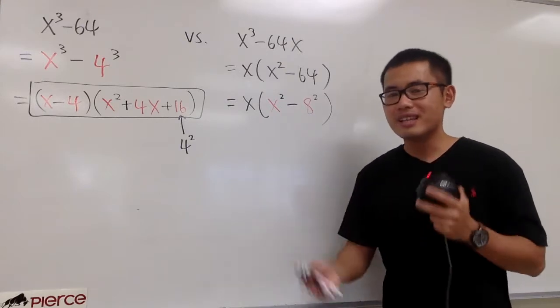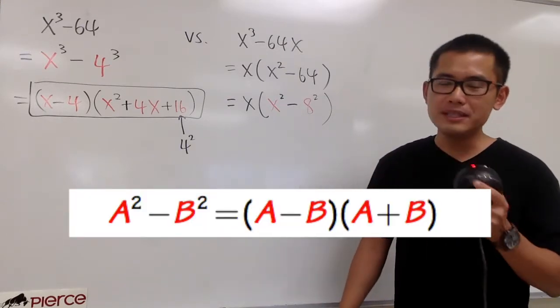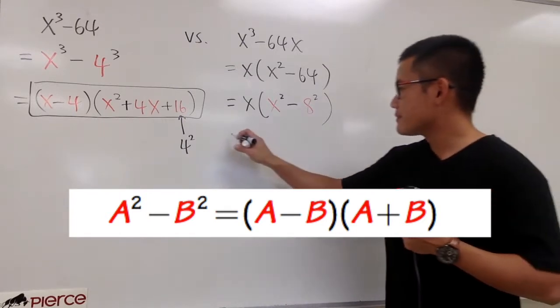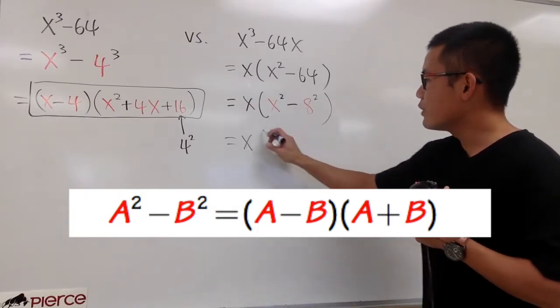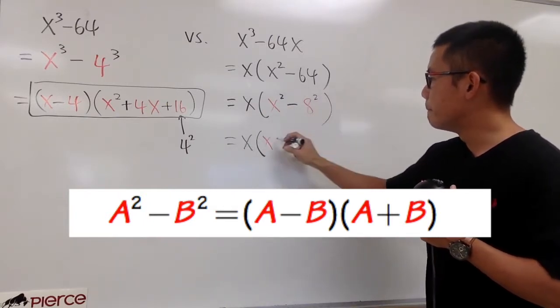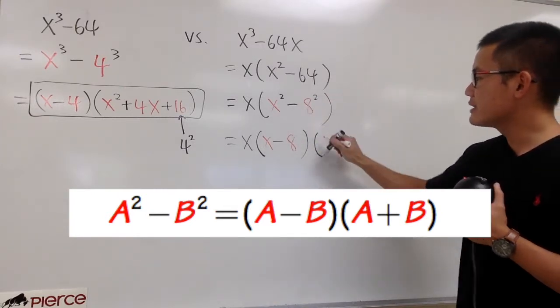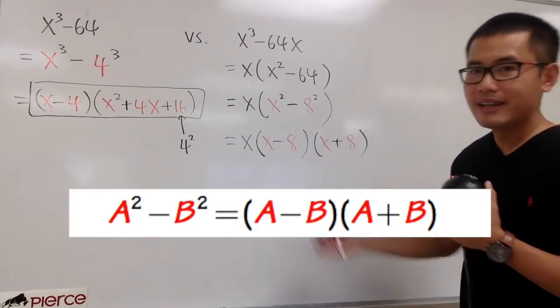We can factor this out, once again, by using the formula, which is right here. a squared minus b squared is a minus b times a plus b. Okay. Don't forget this x. Put that down. To factor this out, the first parentheses is going to be x, x minus 8. And then the second one is going to be x plus 8. Okay? And that's it.